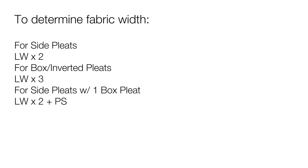For side pleats with one box pleat, you will multiply your LW measurement by 2 and add your desired pleat size. Make sure to add seam allowance to your final number.